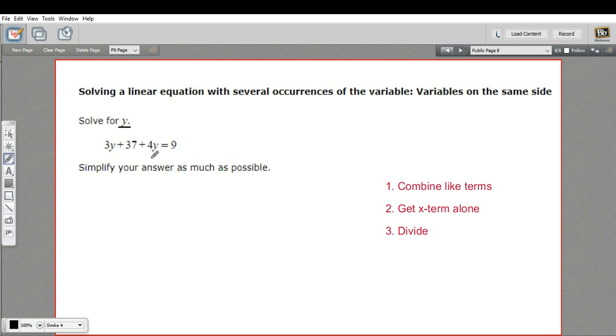To solve a problem like this one, you're going to first combine any like terms. Then you're going to get the variable term alone on one side of the equation, either by adding or subtracting. And finally, you're going to divide by whatever the variable is multiplied by.